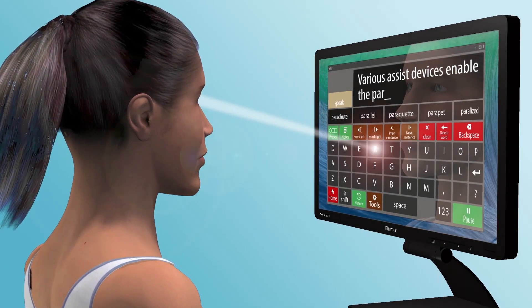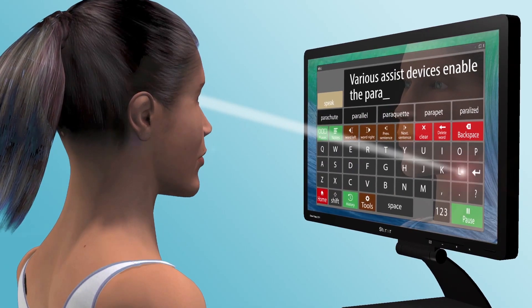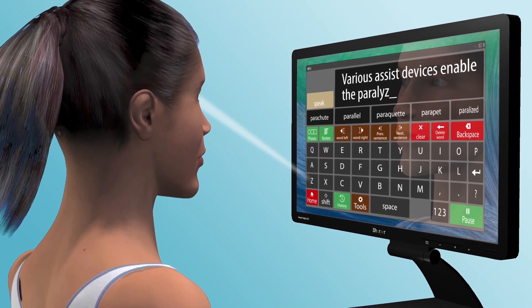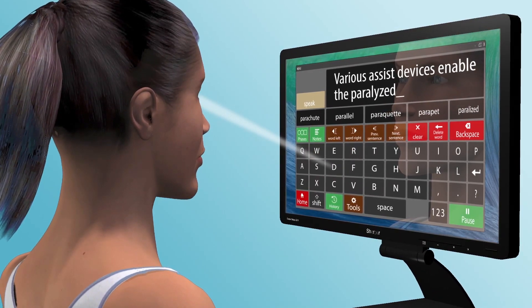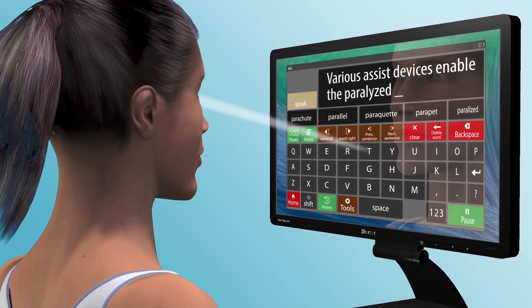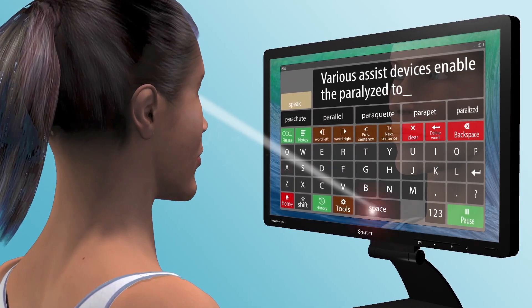Assistive devices can enable people with paralysis to type sentences letter-by-letter at up to 10 words per minute. But that's a far cry from everyday conversations, which take place at about 150 words per minute.